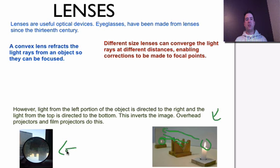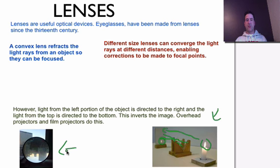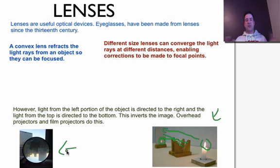Some useful functions of lenses — a lot of people first think of eyeglasses. Eyeglasses were made as early as the 19th century to help us see clearly. The convex lens refracts the light — bends it — so that light rays from an object can be focused. The lens refracts those light rays from the object and brings them into focus.